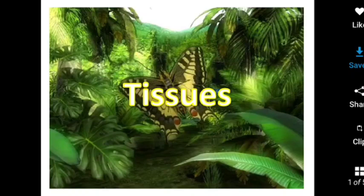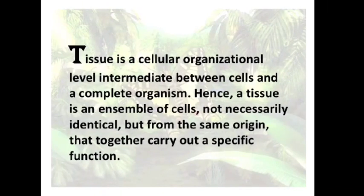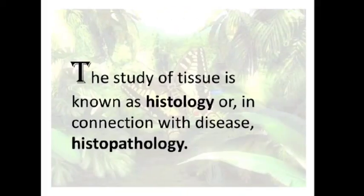We are going to learn the chapter on tissues by following these slides. Tissue is a cellular organization level intermediate between cells and a complete organism. Hence a tissue is an ensemble of cells, not necessarily identical but from the same origin, that together carry out a specific function. The study of tissue is known as histology, or in connection with disease it is called histopathology.